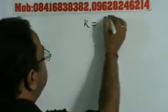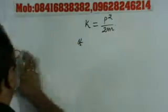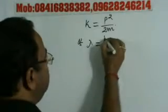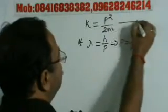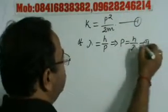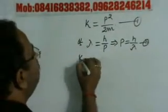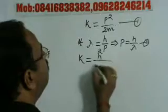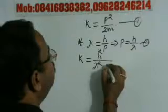As we know, the kinetic energy K is equal to p²/2m. Also, from the de Broglie wavelength relation, lambda equals h/p, which gives p equals h/lambda — this is equation number one. This is equation number two. Putting the value of p into the kinetic energy equation, we have K = h²/lambda² into 2m.